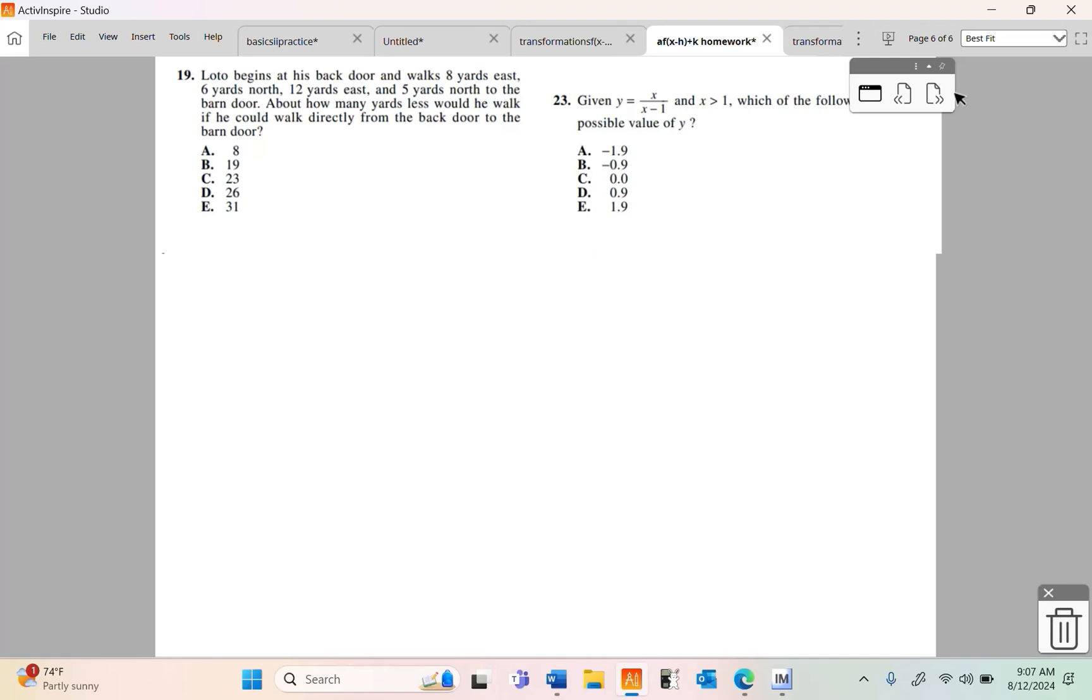Lotto or Lotto, I'm not sure how you pronounce his name. I got his pronoun right. It's a his. Lotto begins at his back door and walks 8 yards east, 6 yards north, 12 yards east, 5 yards north to the barn door. So, hopefully, you know your directions here. If not, I just don't know how you exist in this world. That'd be north, that'd be east. So, this dude begins at his back door and walks 8 yards east. So, he goes over about 8 yards. And then he walks 6 yards north. And then he walks 12 yards east. And then he walks, 5 yards north? And what we want to know is how much distance he could have saved had he just done a straight path. Because, you know, the shortest distance between two points is a straight line.